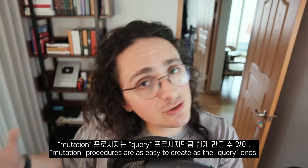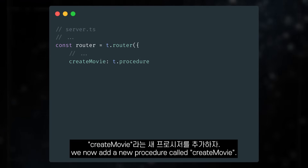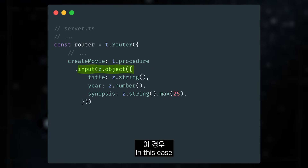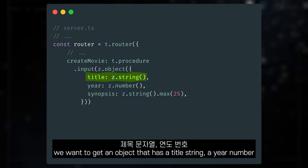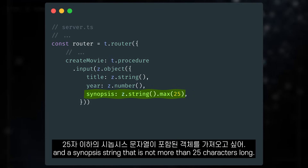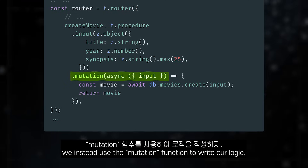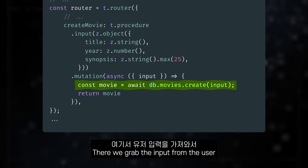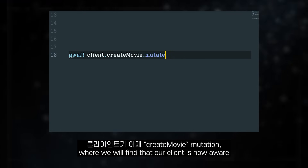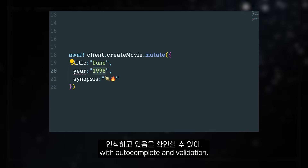Mutation procedures are as easy to create as the query ones. Back in our server, we now add a new procedure called createMovie. We use the input function to specify the type of the data we want to receive — in this case, we want an object with a title string, a year number, and a synopsis string that is not more than 25 characters long. Instead of using the query function, we use the mutation function to write our logic. There, we grab the input from the user and use it to create a new movie in our database. We can now go back to our frontend where we will find that our client is aware of the createMovie mutation, with autocomplete and validation.